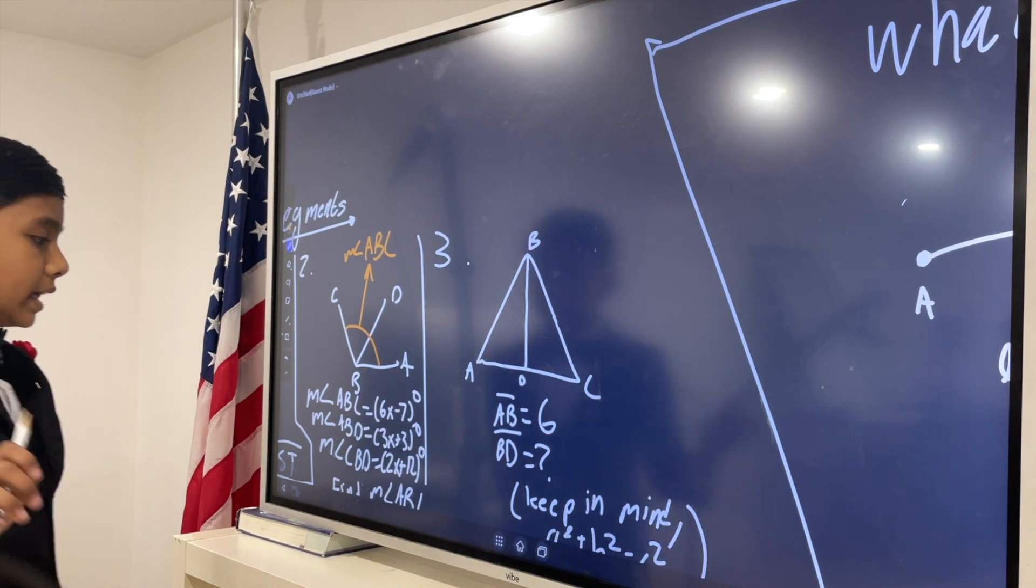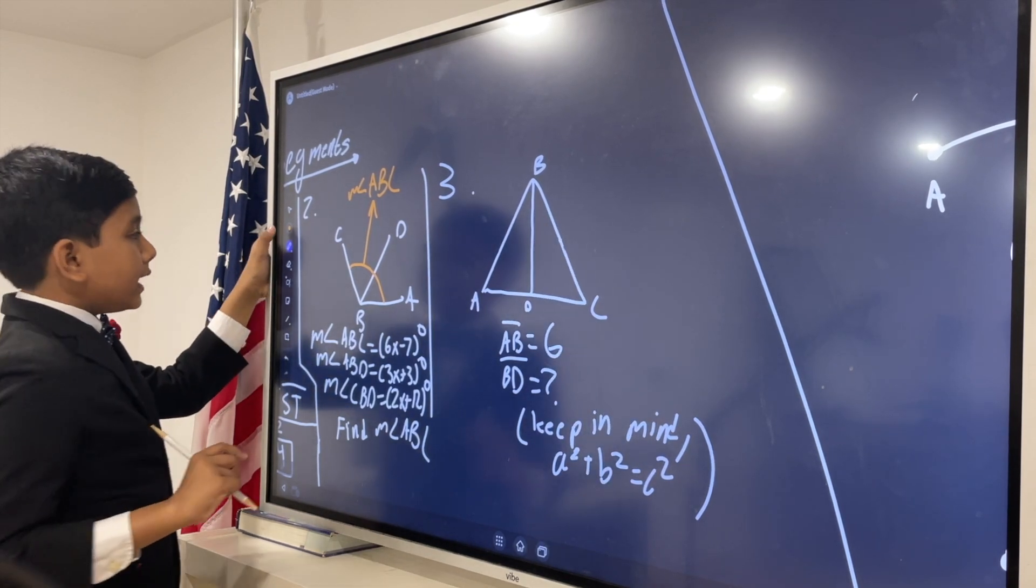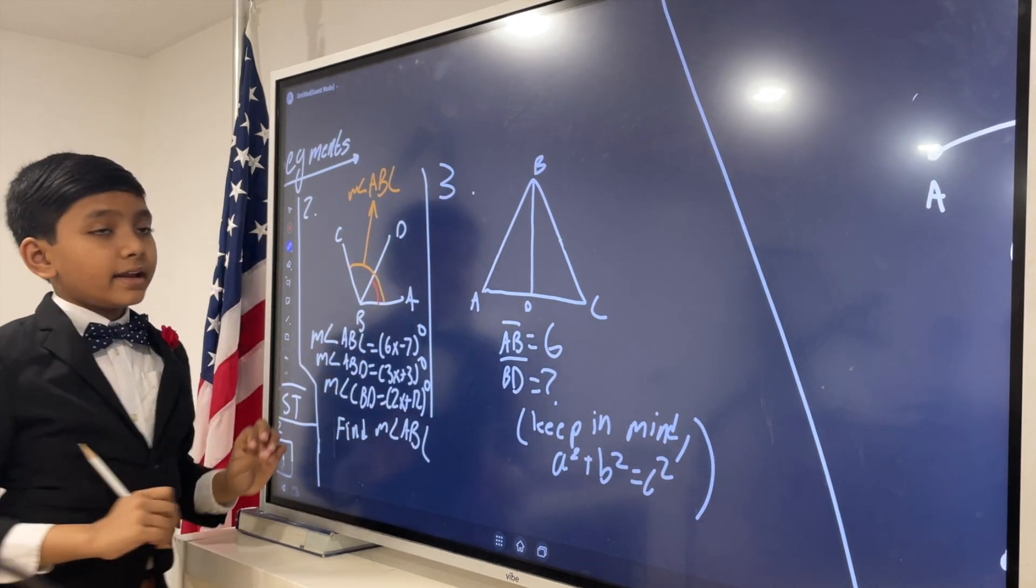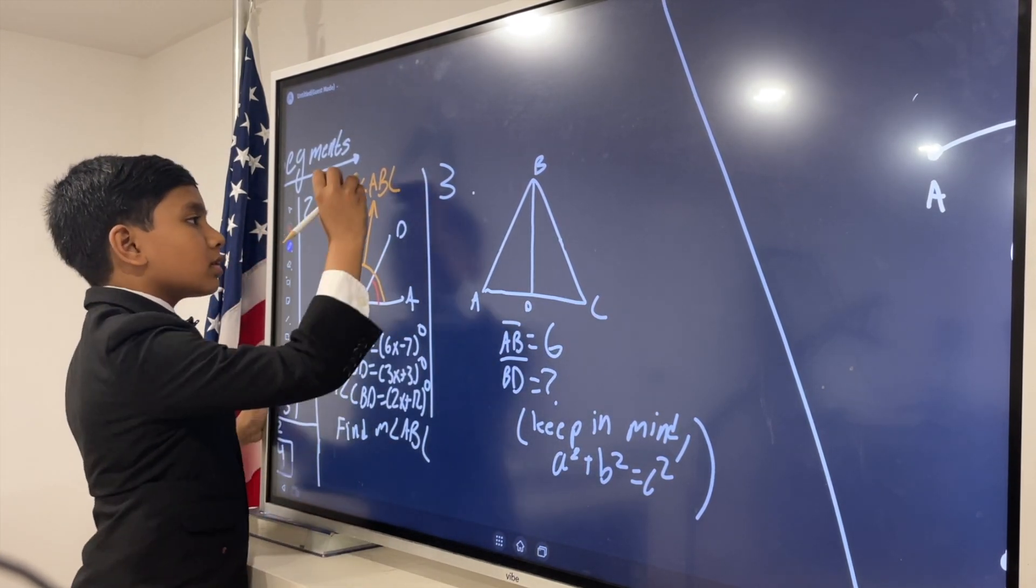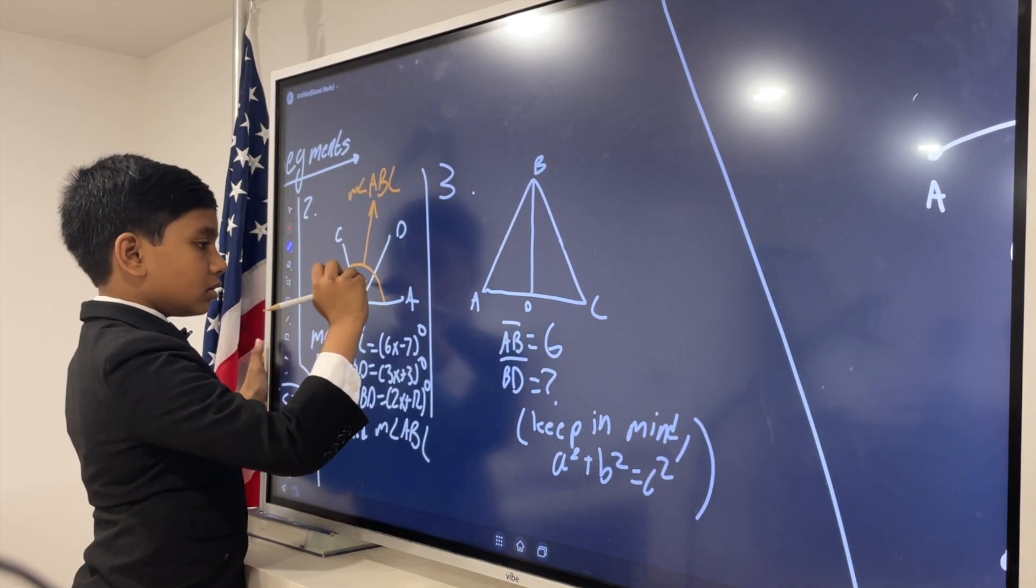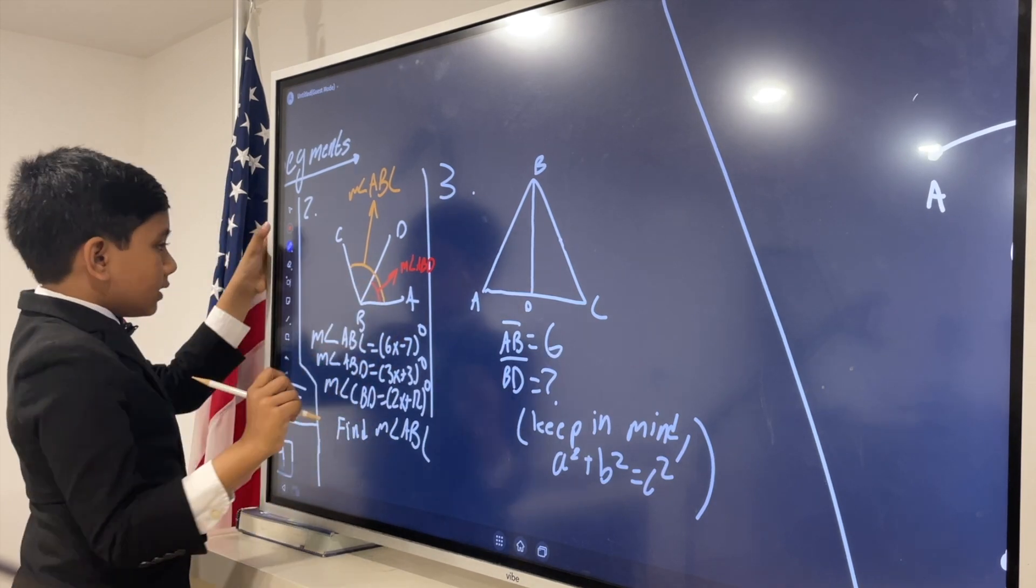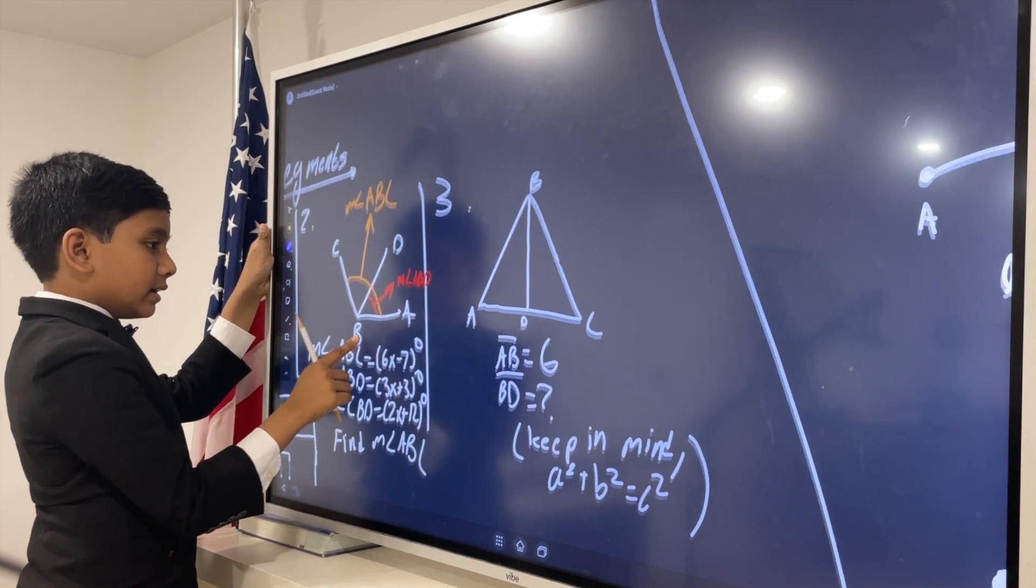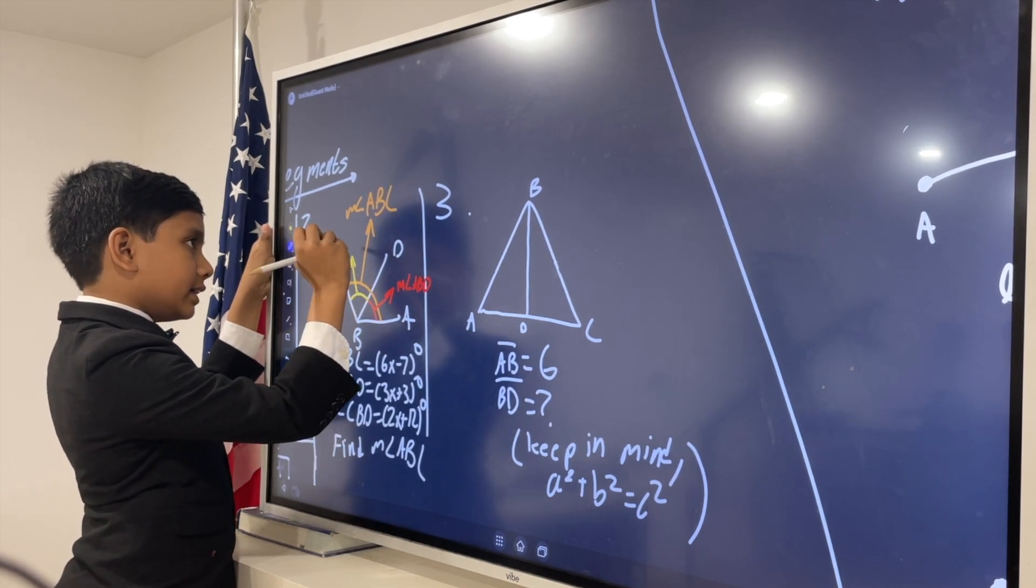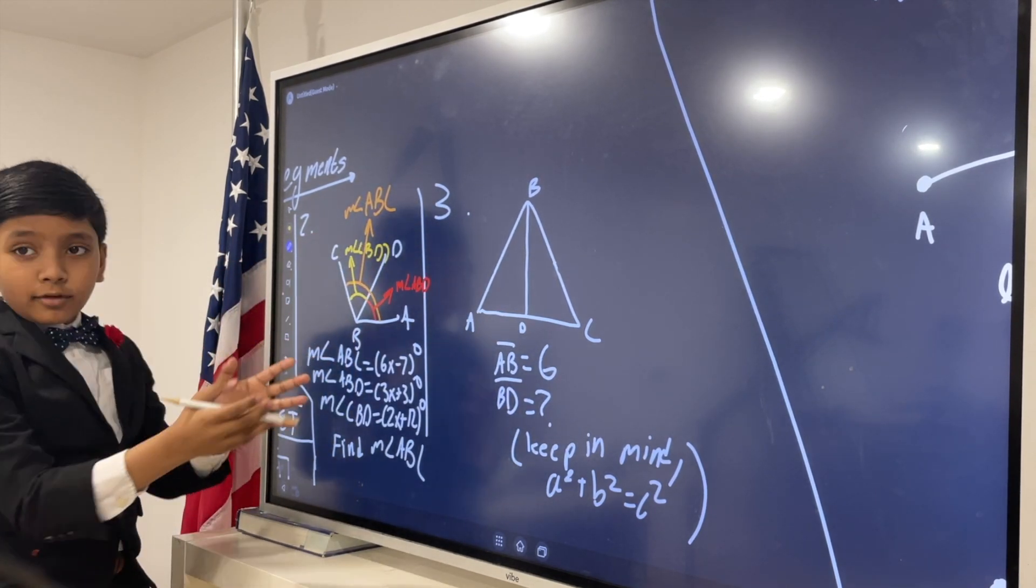What about ABD? Well, ABD is 3x plus 3. So, ABD would be this. But, it would get incredibly confusing if we drew this and angle ABD the same color. So, this is angle ABD and in yellow, we have angle CBD. Get it? Yellow and red make orange.